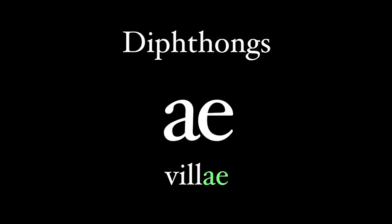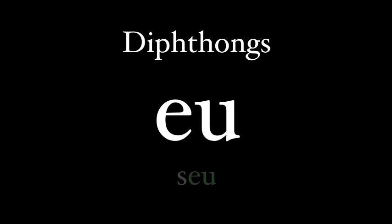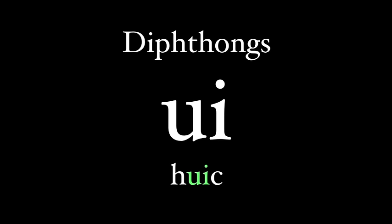The other diphthongs in Latin are EI, pronounced as ay as in deinde; OE, which is oy in poena; EU, which is eh-oo in seu; AU, which is ow as in aurum; and UI, which is wee like in quick.